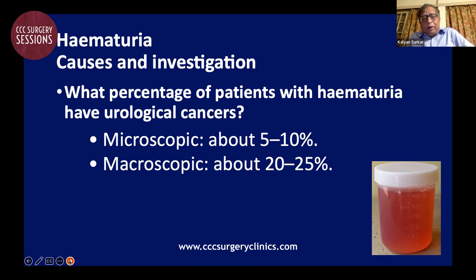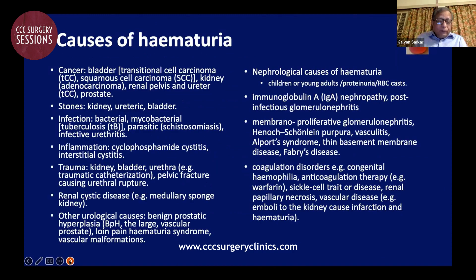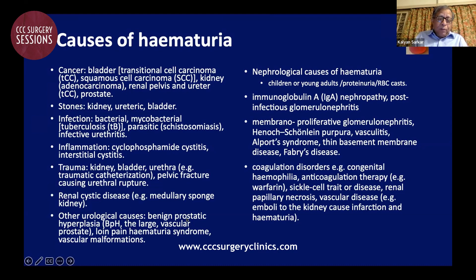About five to ten percent of patients with microscopic hematuria will have cancer, and about twenty to twenty-five percent of patients with gross hematuria will have cancer — these are important statistics. The causes of hematuria include congenital, traumatic, inflammatory, and infective causes. The commonest causes are stones and cancer, and BPH can also cause hematuria.